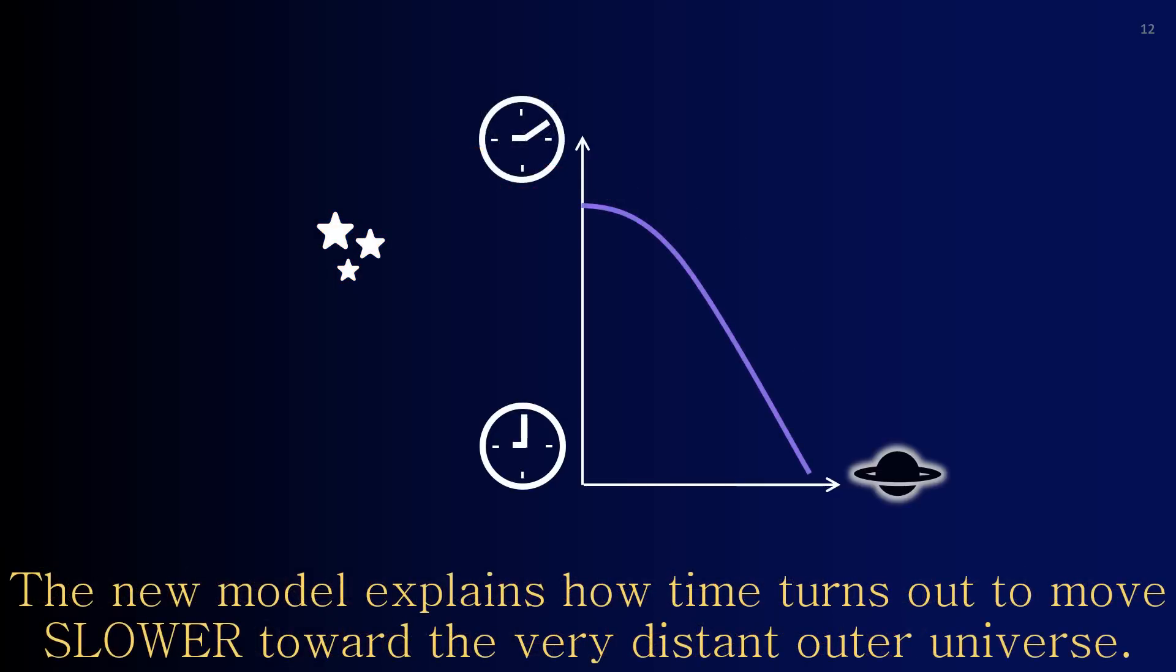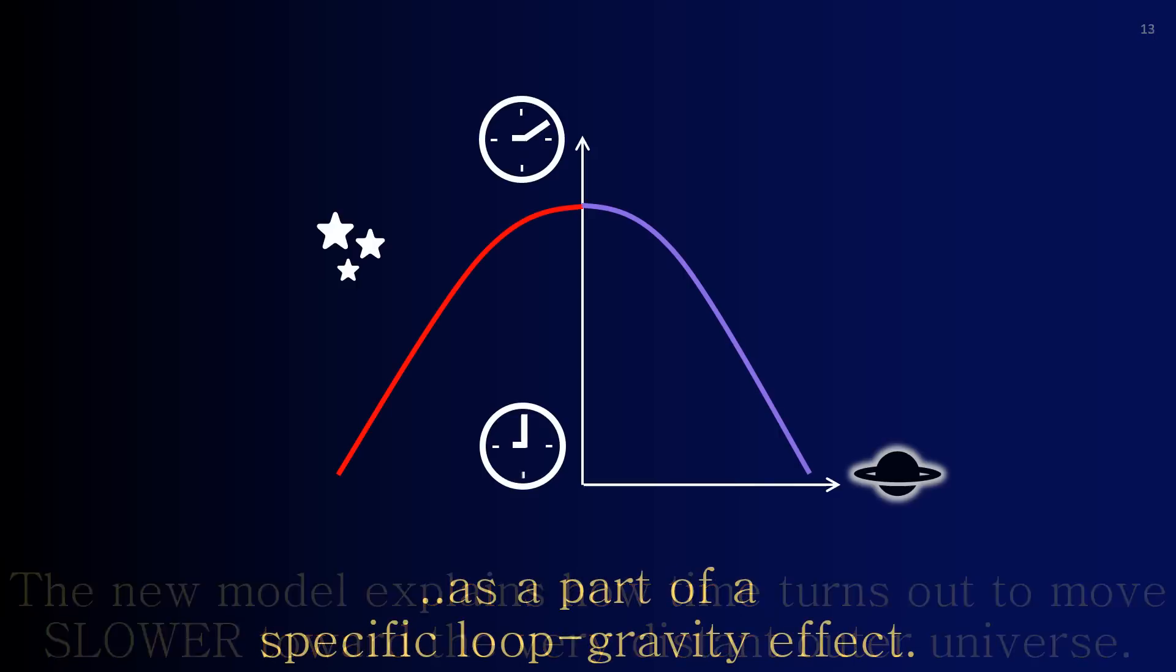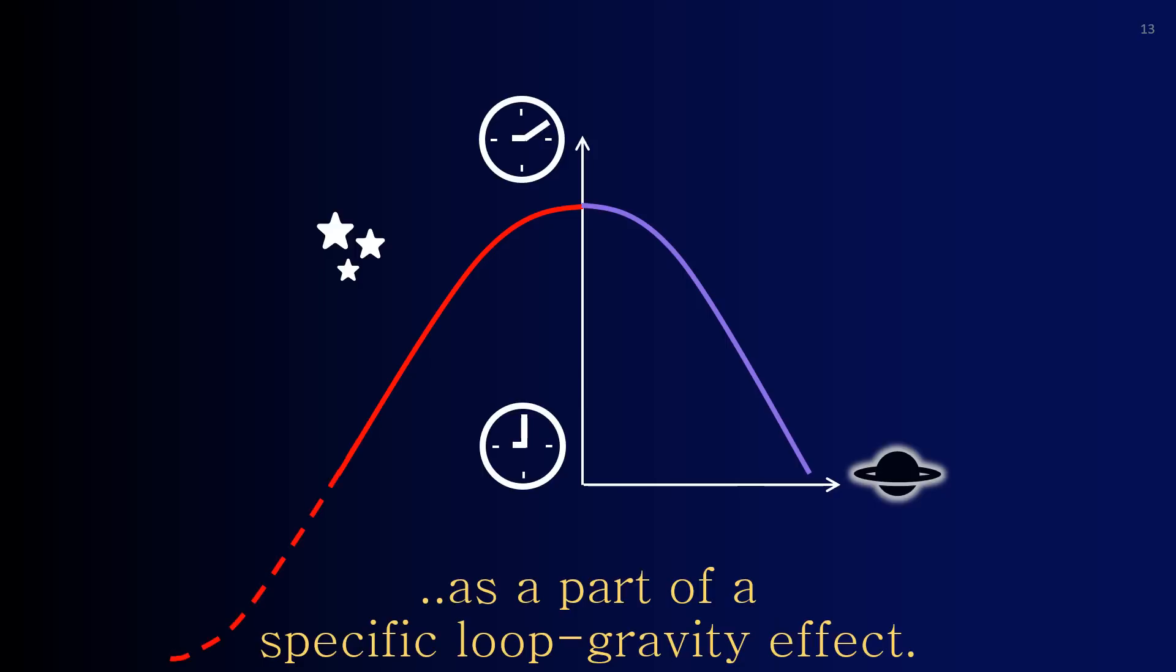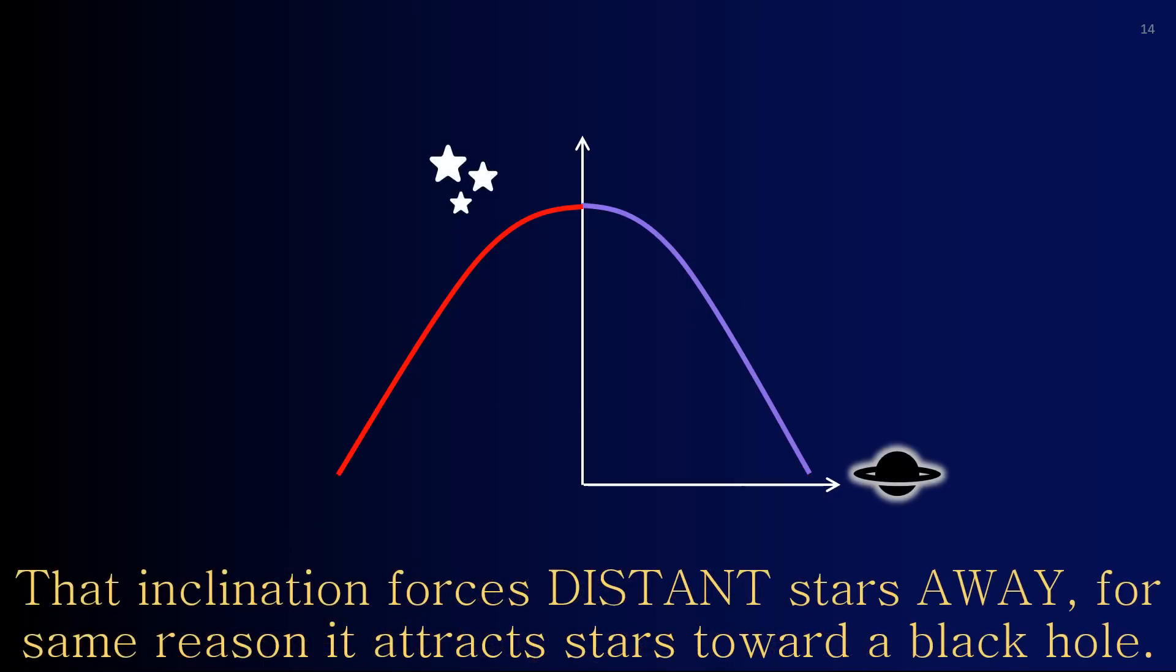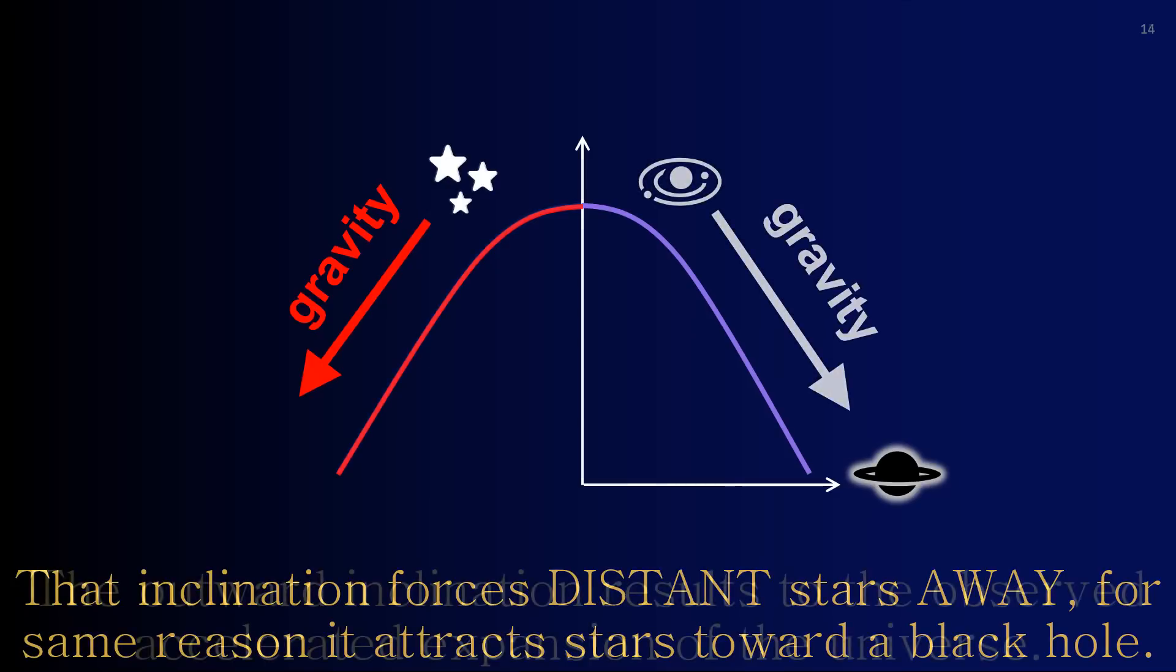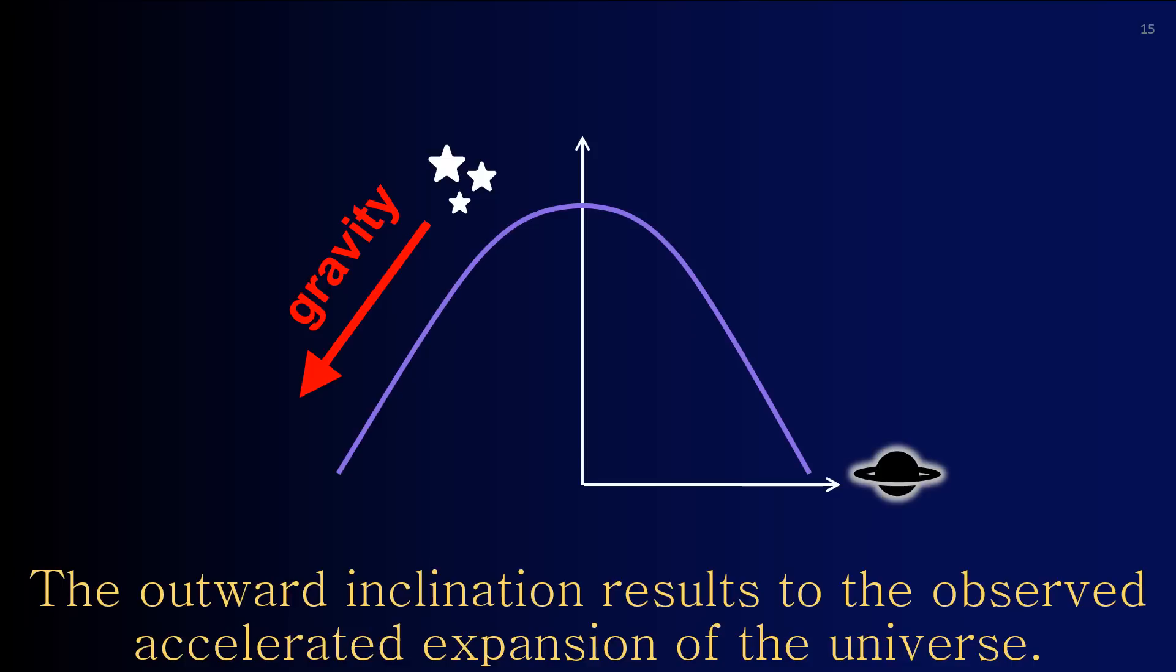The new model explains how time actually turns out to move slower toward the very distant outer universe, as a part of a specific loop gravity effect. That inclination forces distant stars away, for the same reason it attracts stars toward a black hole. The outward inclination results in the observed accelerated expansion of the universe.